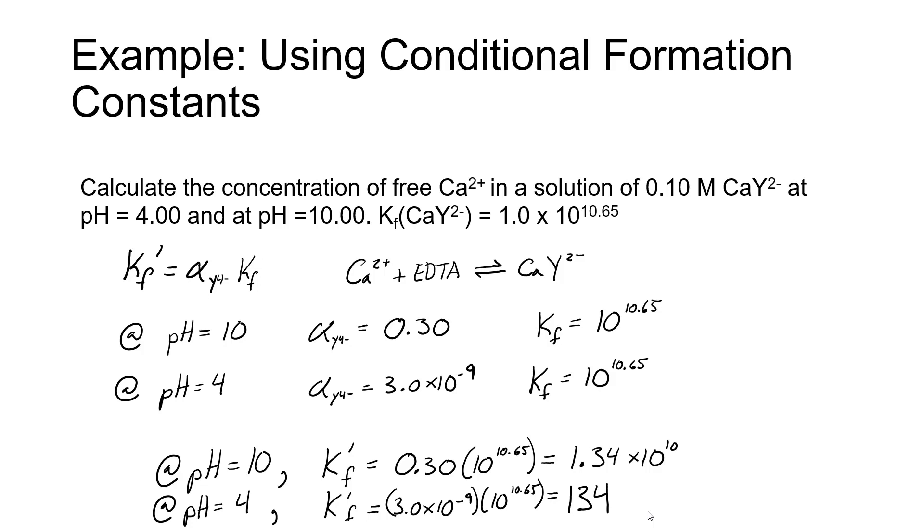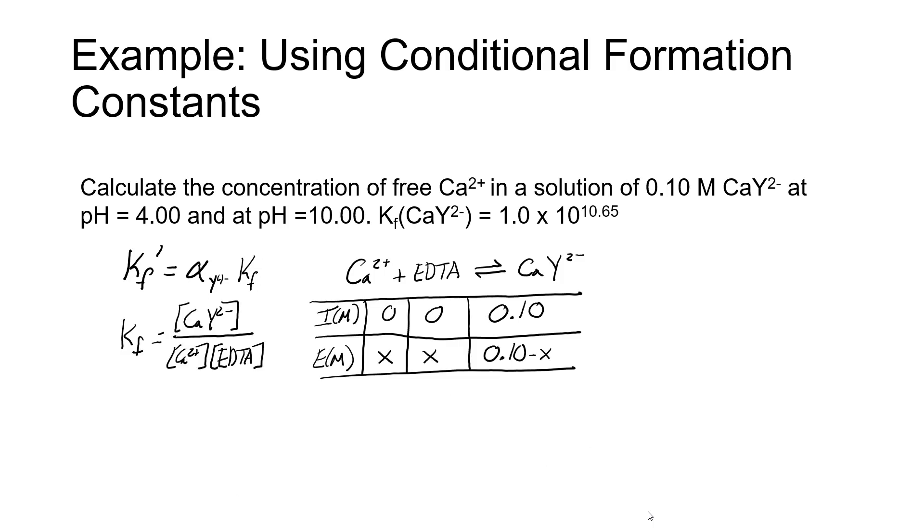Once we have our conditional formation constants, we can use standard equilibrium problem logic to calculate the concentration of calcium that remains in solution. We're going to use a modified ice table. Our formation constant broadly takes the form of the calcium EDTA complex in the numerator, concentration of free calcium times concentration of unreacted EDTA in the denominator. Obviously, the concentration of free calcium is what we're trying to calculate at each pH. Regardless of the pH, the setup of the equation takes the same basic form. We're told in the problem that the concentration of the calcium EDTA complex is 0.1 molar.